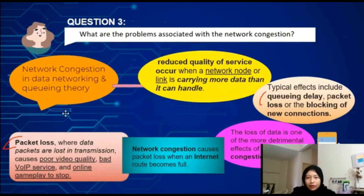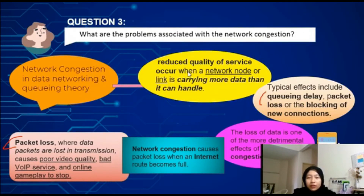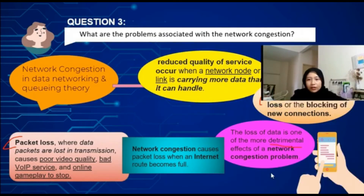Question three: what are the problems associated with network congestion? Network congestion in data networking and queuing theory is the reduced quality of service that occurs when a network node or link is carrying more data than it can handle. Typical effects include queuing delay, packet loss, or the blocking of new connections. The loss of data is one of the more detrimental effects, which is the most harmful thing about a network congestion problem.